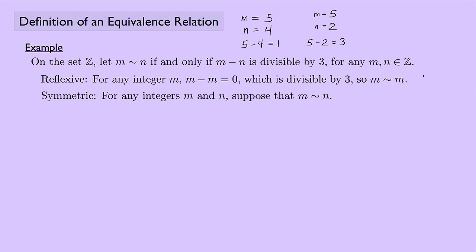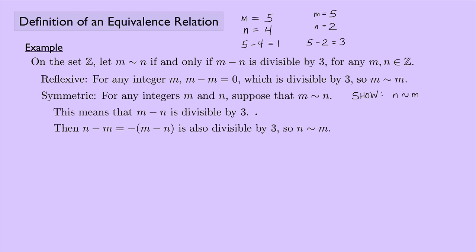For symmetric: for any integers M and N, suppose M is equivalent to N. We need to show N is equivalent to M. By definition, M equivalent to N means M minus N is divisible by three. Then N minus M, which is the negative of M minus N, is also divisible by three. So N is equivalent to M. For example, with M equals five and N equals two, flipping to M equals two and N equals five gives two minus five equals negative three, which is still divisible by three.